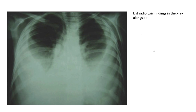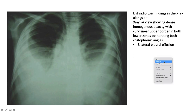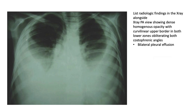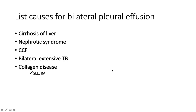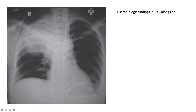Here we see a PA projection showing dense homogenous opacification with a curvilinear border bilaterally, and we can't see the costophrenic angles. This is a bilateral pleural effusion. Causes include cirrhosis of the liver, nephrotic syndrome (both causing hypoalbuminaemia), congestive heart failure, bilateral extensive TB, and collagen diseases such as systemic lupus erythematosus and rheumatoid arthritis.